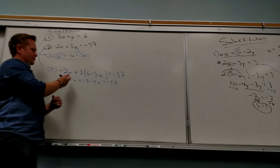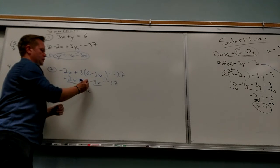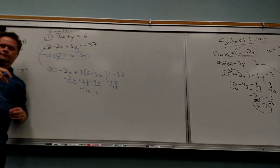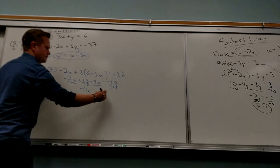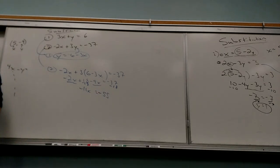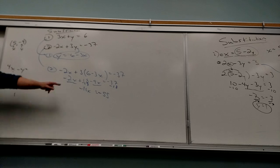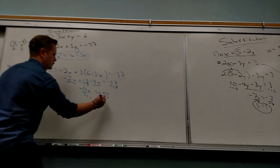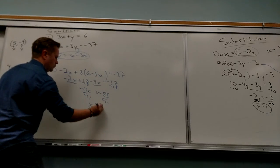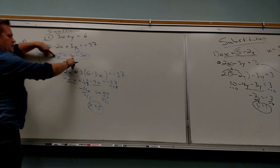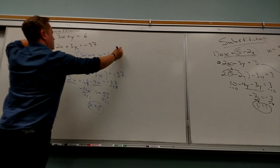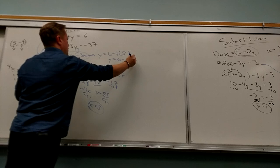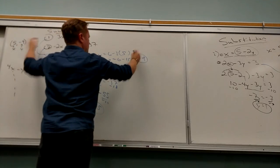So where do I go from here? What's negative 37 minus 18? Negative 55. And then when I divide by negative 11, I get x equals 5. Kick ass. And then how do I get Y? I go back — Y is 6 minus 3 times x. But now we know x is 5, so 6 minus 15 is negative 9. Kick ass.